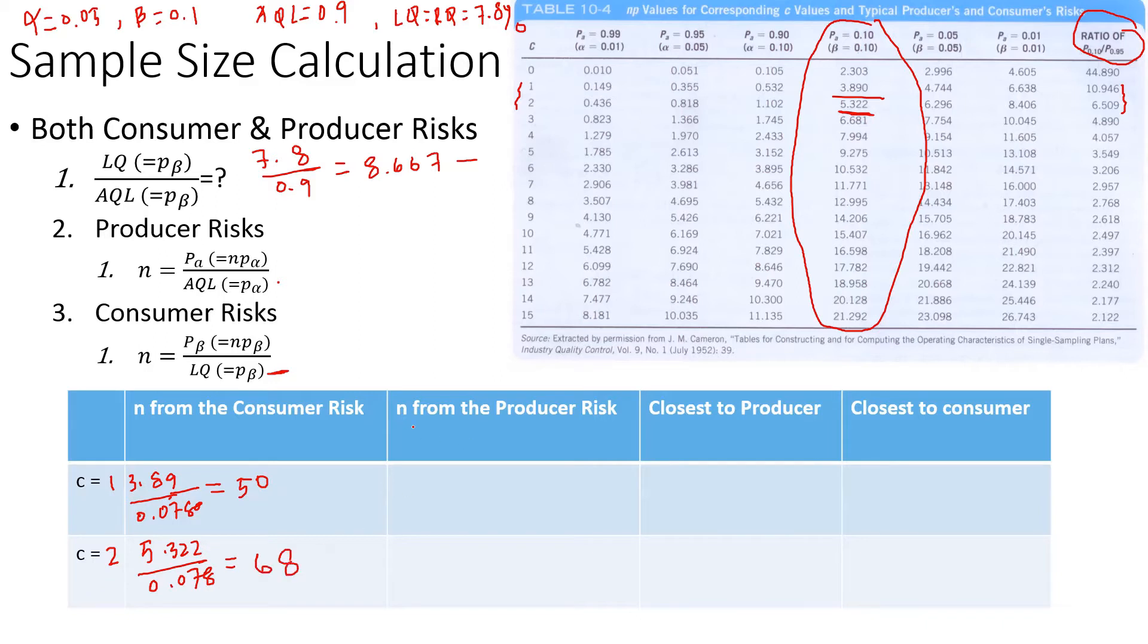Now for the producer risk, we use this equation. For C value 1 at 95%, the NP value is 3.355 divided by the AQL of 0.009, or 0.9%. This gives us a sample size of 39.